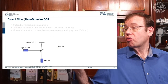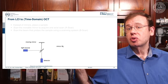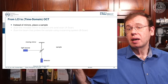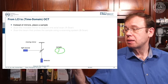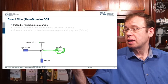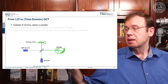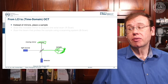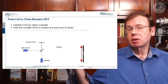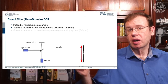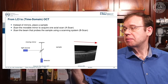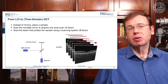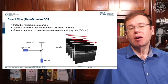We can now move from time domain OCT to a different setup where we replace the second mirror with a sample — for example, the eye — and scan the retina. Moving the movable mirror up and down constructs an A-scan, giving a depth profile along the retinal depth direction. Scanning many beams laterally gives a B-scan, and repeating that produces a volumetric scan over an entire 3D volume.